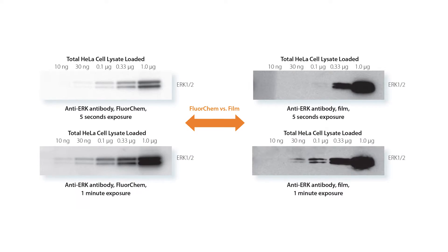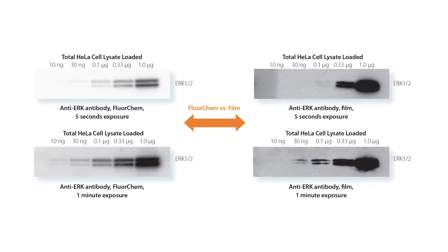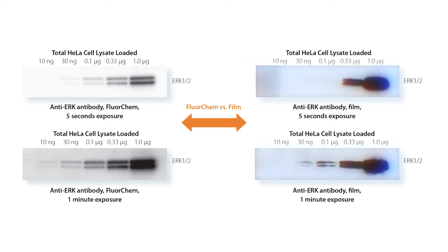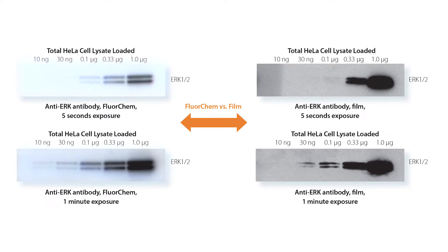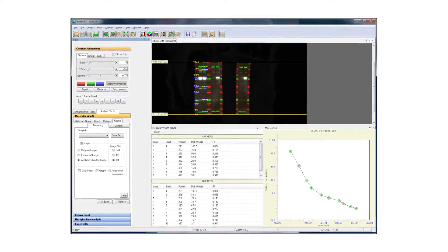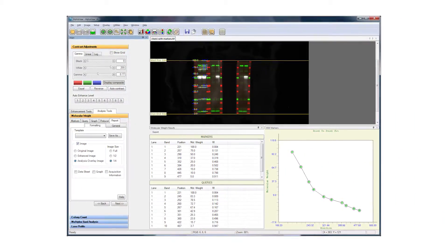With imaging speeds that blow film away, you don't have to worry about under- or over-exposure of your gels and blots. Keep the sensitivity you get with film without the dynamic range trade-off. You can detect a wide range of protein concentrations on the same blot.